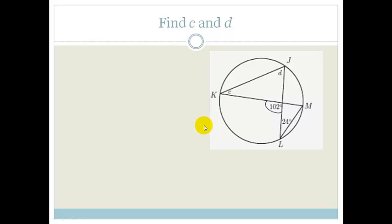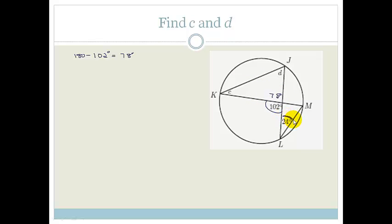There are a couple of ways to do this. The first way is to get into this triangle that's got C and D in it. This angle is supplementary to 102 degrees, so that's 180 minus 102, which is 78 degrees. I also know that this angle is being subtended by J and M, and K is also subtended by J and M. Therefore this angle is going to be 24 degrees.